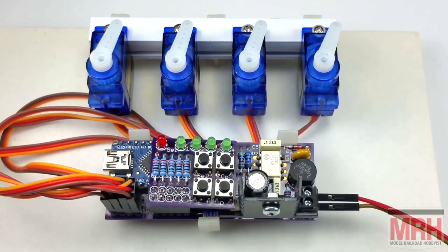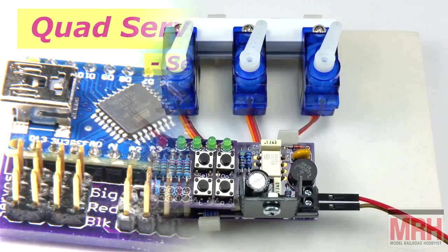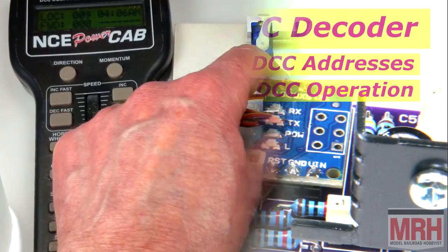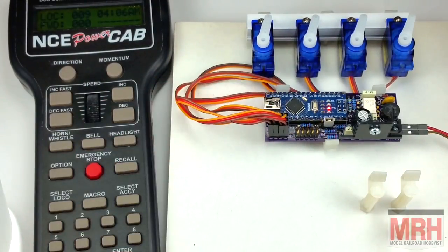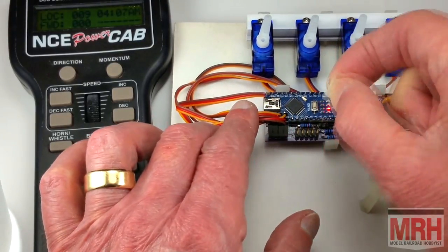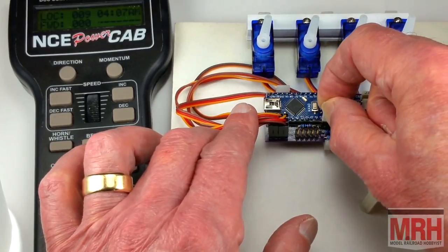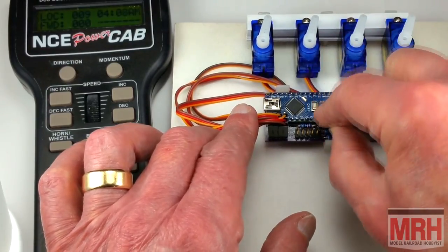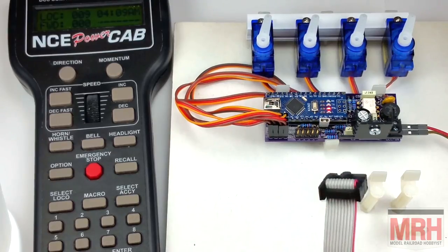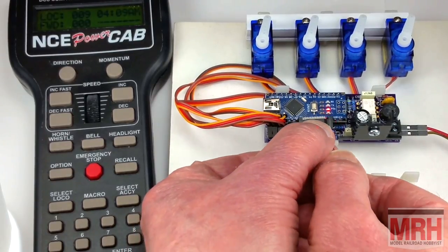The next job is to program the DCC addresses to be used for each servo. To do this, you probably first have to remove the keypad. Then lift the programming link off the post where it's been parked and refit it to short across the two pins of the programming header. Now we don't actually need the keypad to program the addresses, but it gives a useful indication of what's going on.